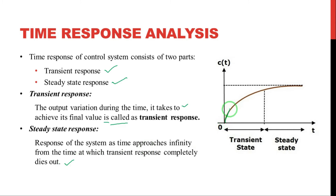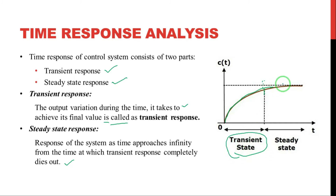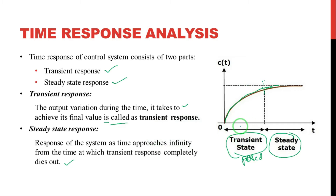Looking at the graph on the right side: the dotted line represents the rated speed of the fan. The graph shows the system trying to attain that rated speed. During that period, the response of the system is called the transient response. After reaching the rated speed, that remaining period is the steady state response.